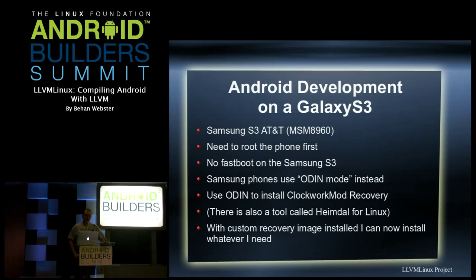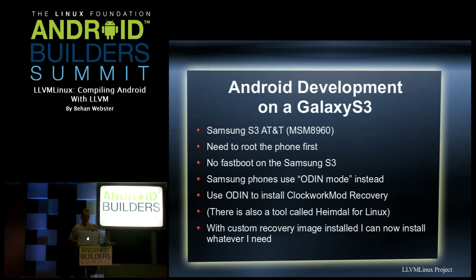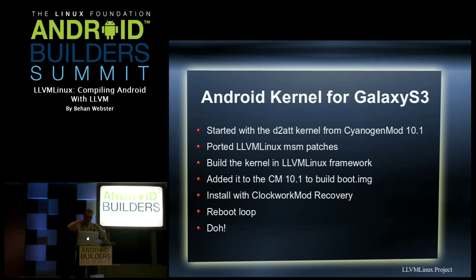When I was doing that, I realized there's no fastboot. Samsung actually uses something called Odin mode, which lets you download and flash images. I put ClockworkMod recovery on there, which gave me more access, but it basically meant I had to burn everything to flash whenever I wanted to do any testing. There's actually a Linux tool called Heimdall — someone reverse-engineered the protocol — but I initially used Windows. Once I had a custom recovery image, I could start making real changes to the Android build and do real development.